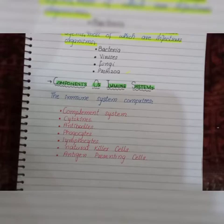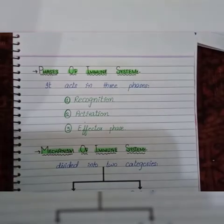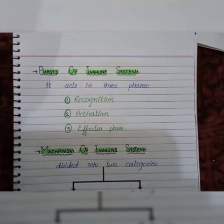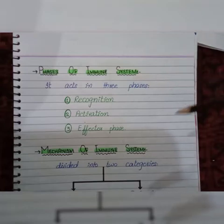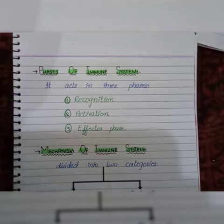These components of the immune system help to maintain immunity by acting in three different phases. These phases are: recognition, activation, and finally the effector phase. We will focus on each one and look at them in a bit more detail.